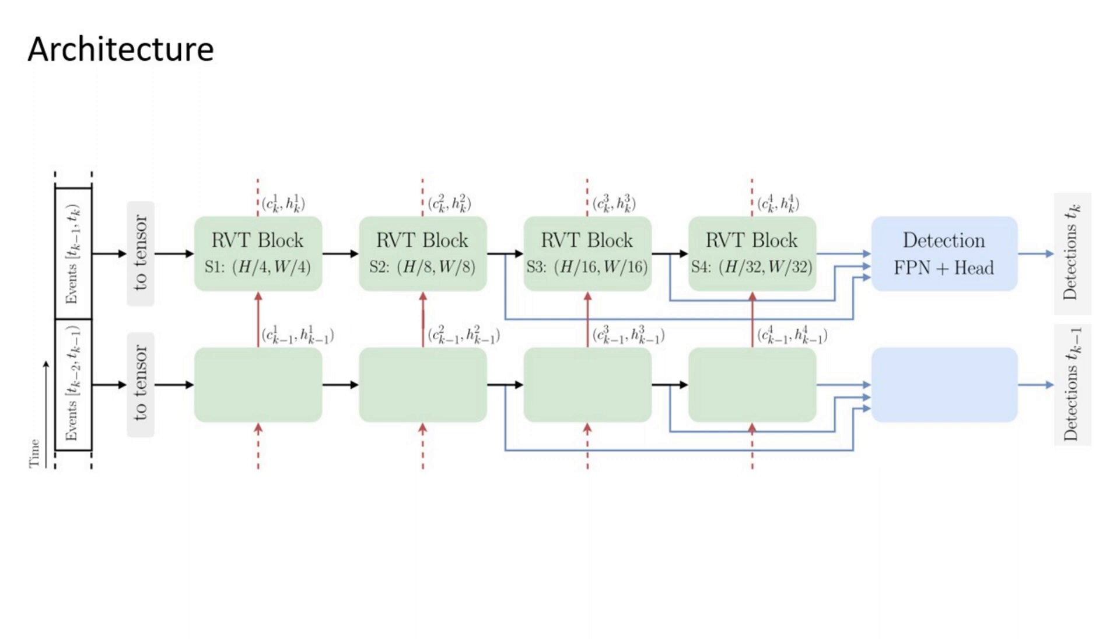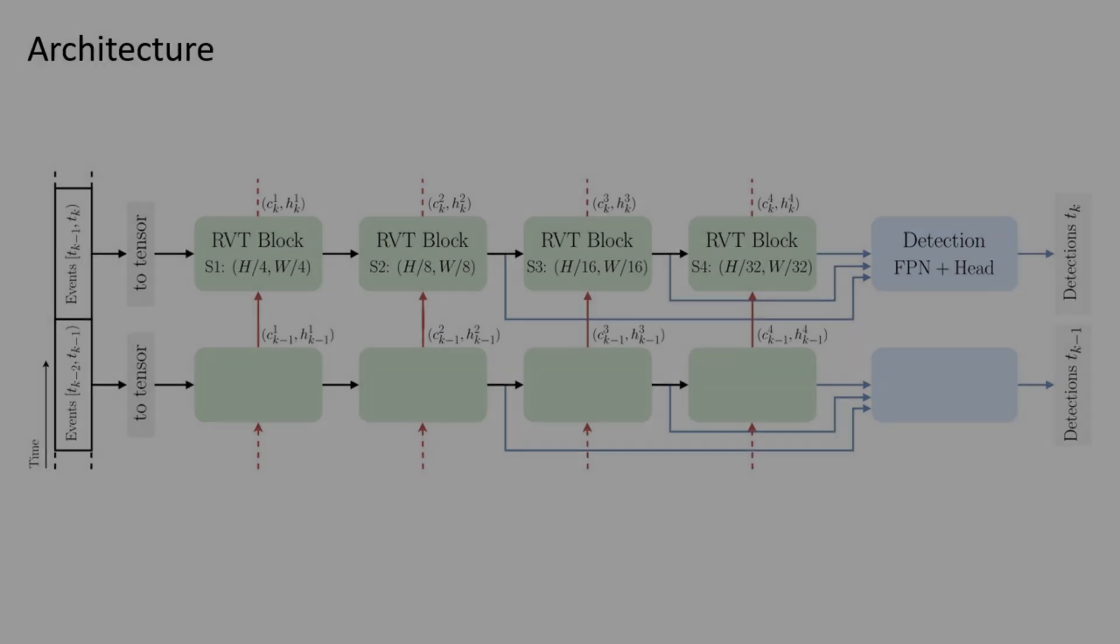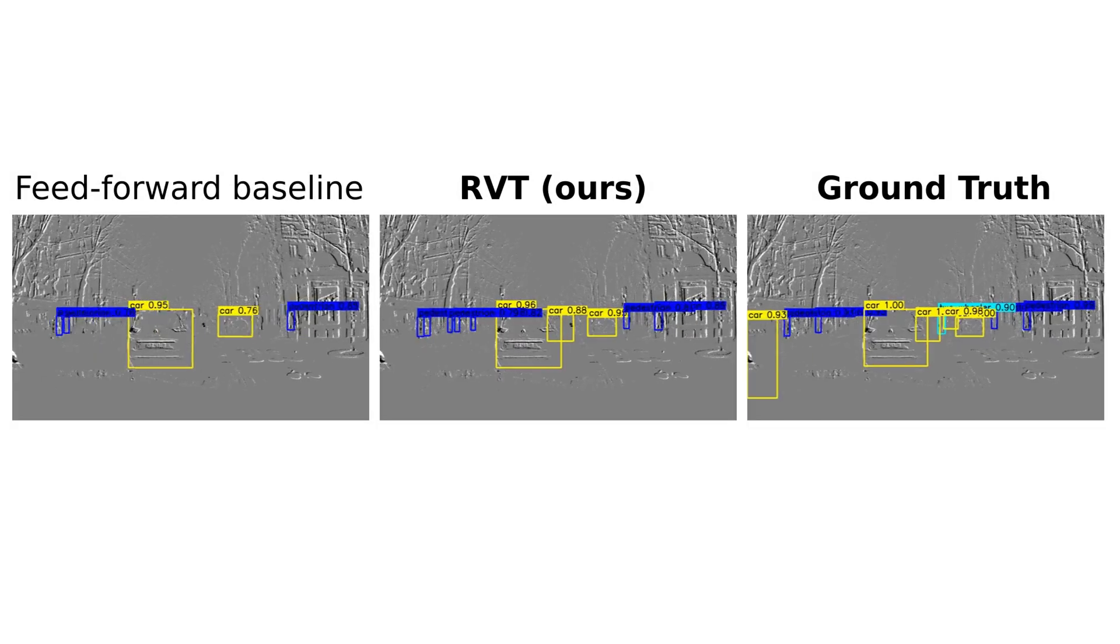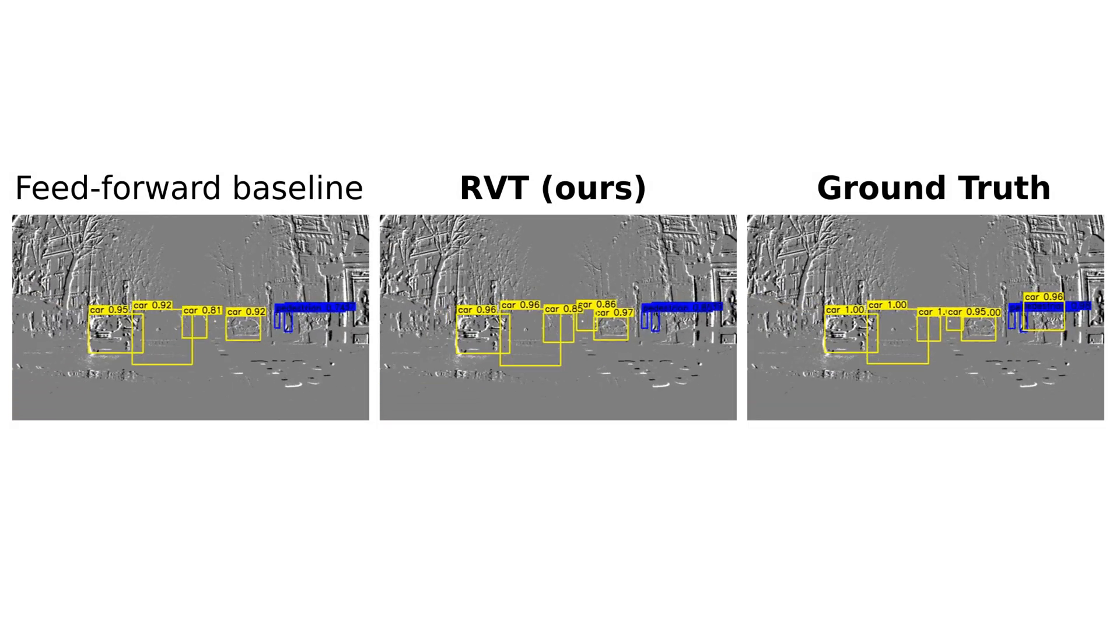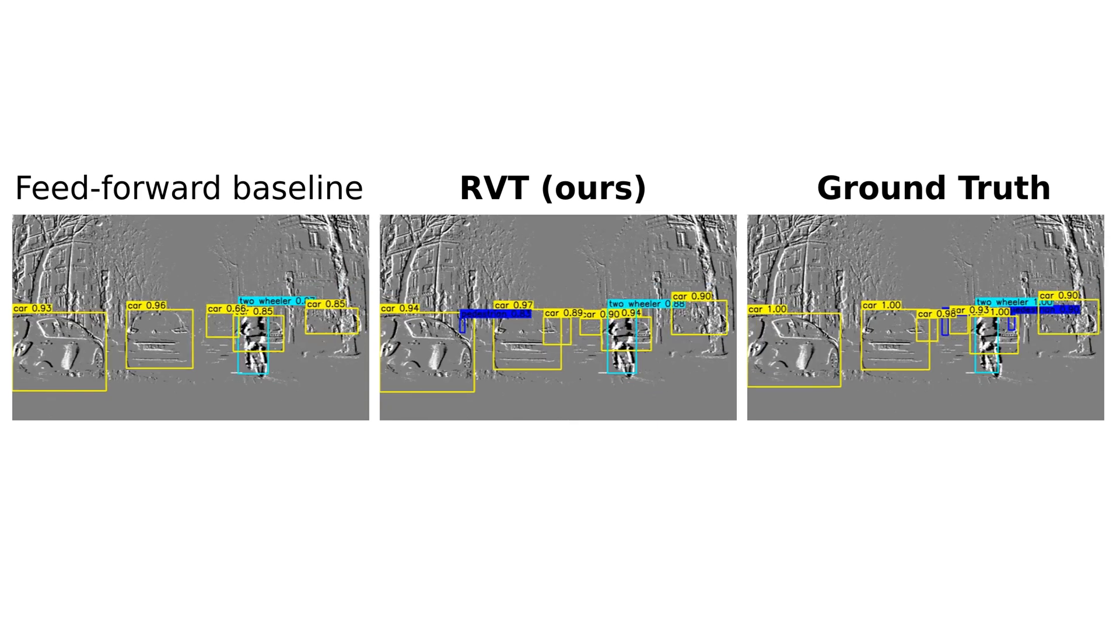Each block reuses the hidden states from the previous timestamp, which allows for object detection even with highly sparse input. This video shows a comparison of a feed-forward neural network with our method, termed RVT.